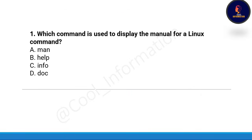First question: which command is used to display the manual for a Linux command? Option A: man, Option B: help, Option C: info, Option D: doc. The correct option is A — the man command is used to display the manual for a Linux command.